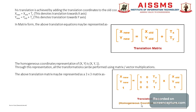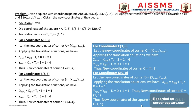Now we will take one example of how 2D translation is performed. Suppose we have a square object with corners A, B, C, D at coordinates (0,3), (3,3), (3,0), and (0,0) respectively. Apply a translation with distance 1 toward the x-axis and 1 toward the y-axis to obtain the new coordinates of the square. The translation vector (tx, ty) = (1, 1).